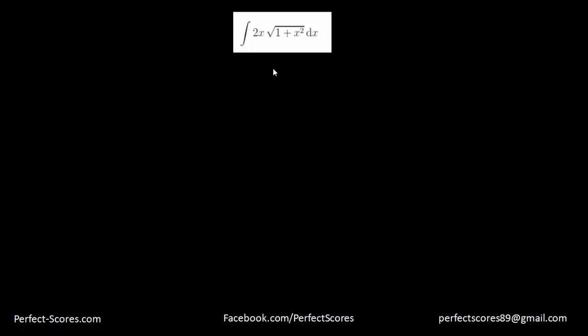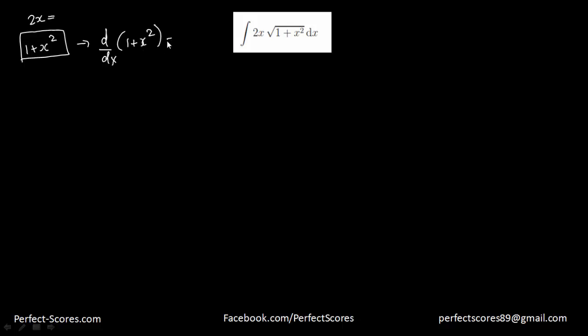What I mean is whenever you want to find the integration of a product or division of two functions, where one function is the derivative of the other. For example, consider integrating 2x times the square root of (1 + x²). Here 2x is one function and (1 + x²) is another, and the derivative of (1 + x²) is 2x — so this is exactly that form.